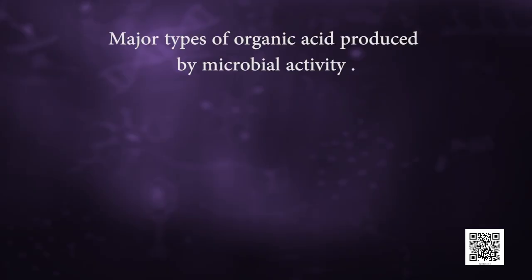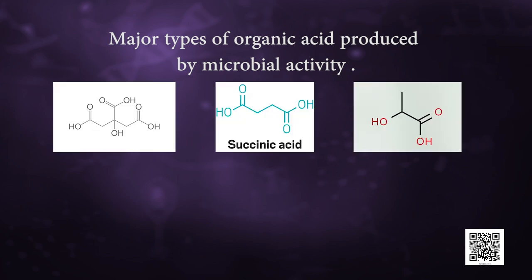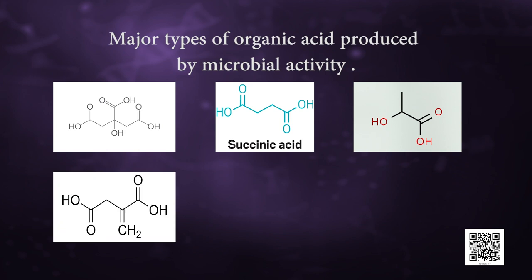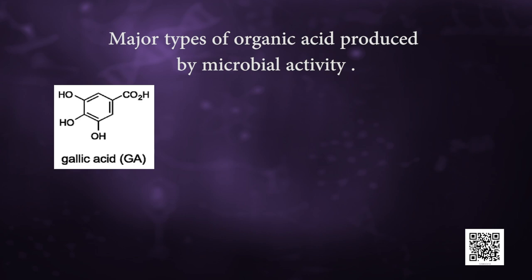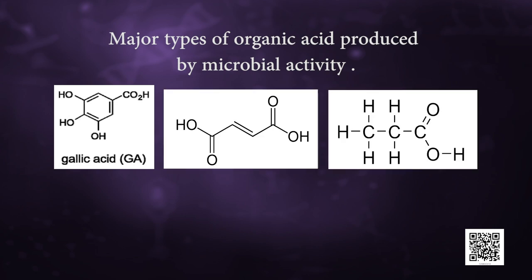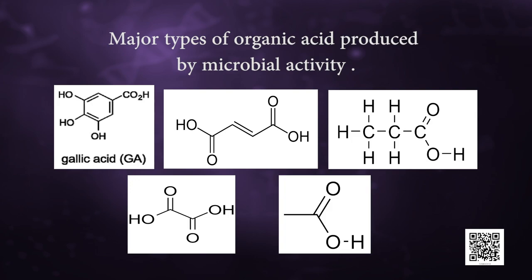Organic acids differ on the basis of the involvement of carbon, hydrogen and oxygen elements. Major types of organic acid produced by microbial activity are citric acid, succinic acid, lactic acid, itaconic acid, lactobionic acid, gluconic acid, gallic acid, fumaric acid, propionic acid, oxalic acid and acetic acid.